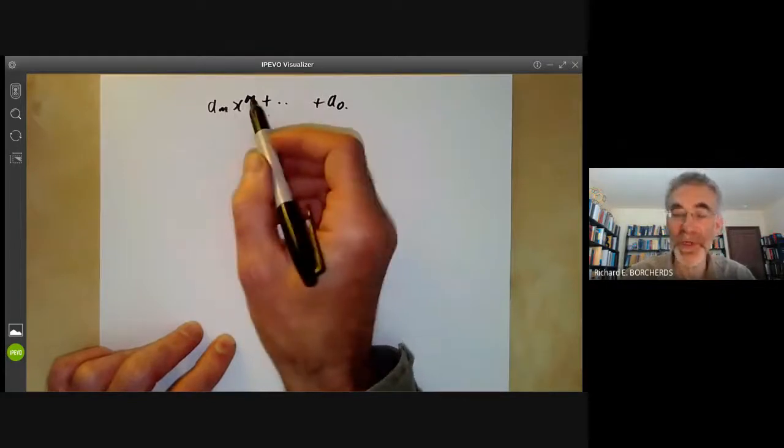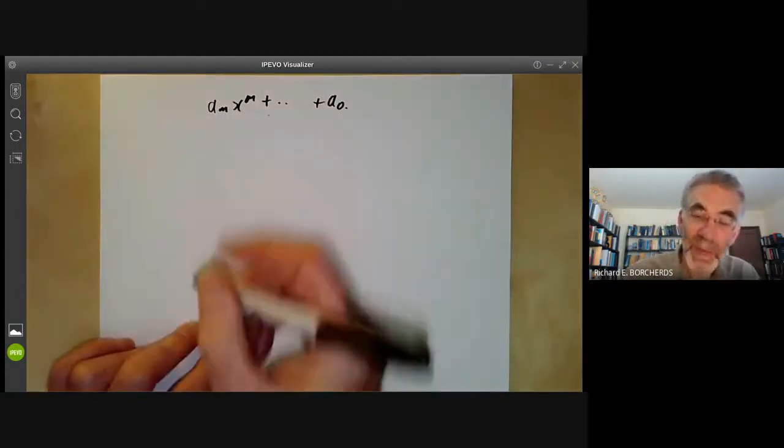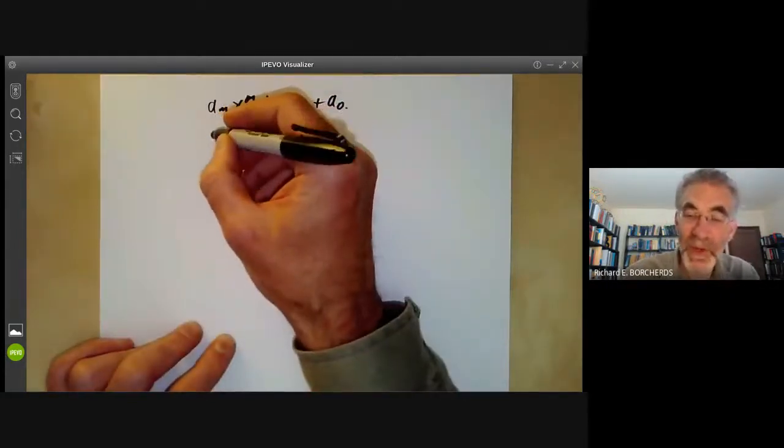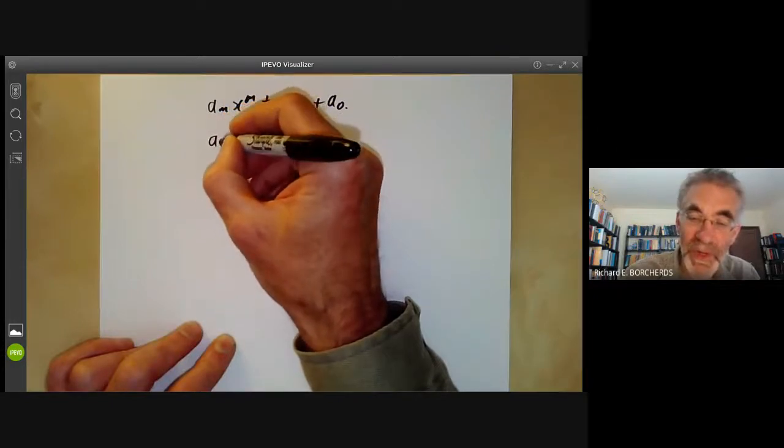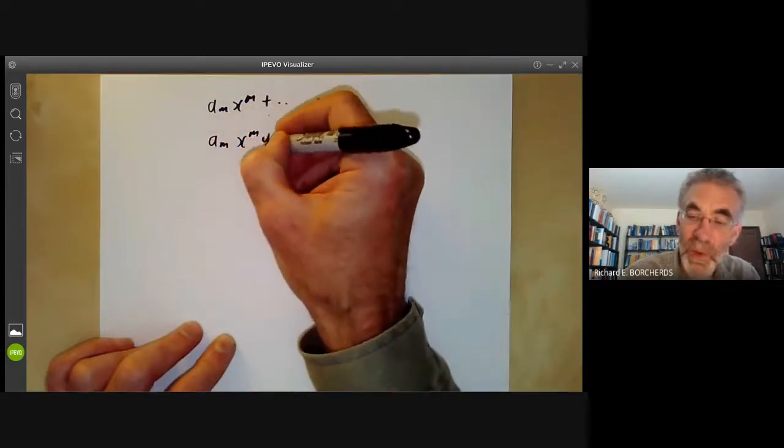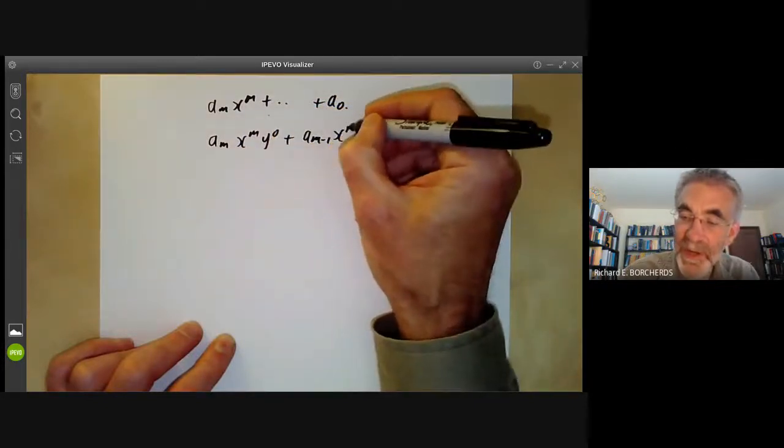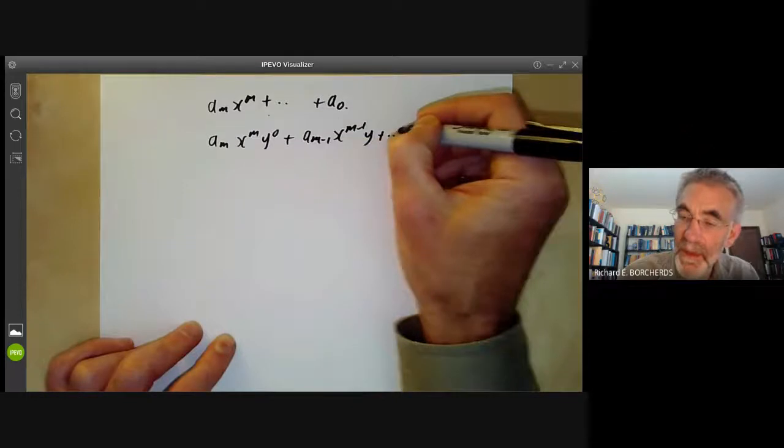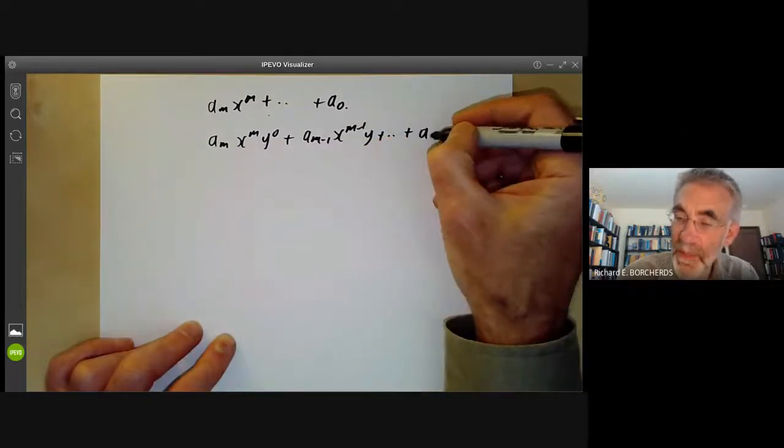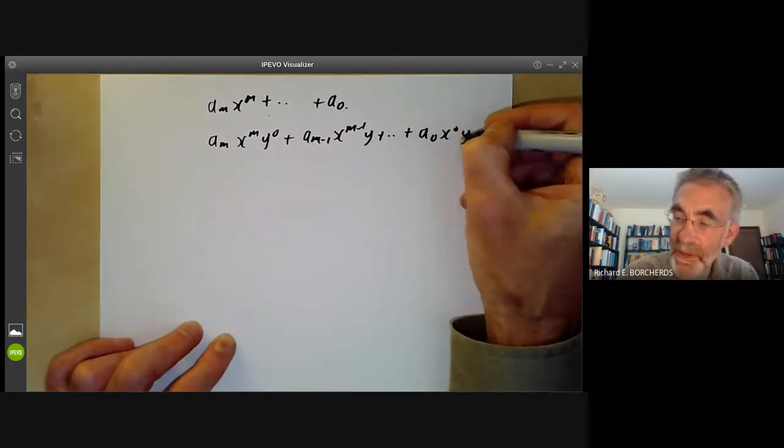We can make more sense of this if we look at the corresponding homogeneous polynomial, am x to the m y to the 0, plus am minus 1 x to the m minus 1 y, and so on, plus a0 x to the 0 y to the m.